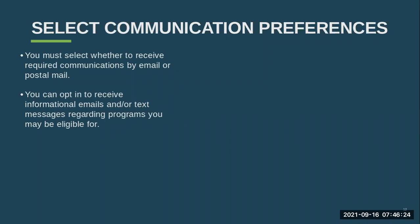The next step is going to be selecting communication preferences. FSA will send communications — sometimes based on programs that students are eligible for. They're not going to spam you, but they can send good information on programs. You need to decide whether to get information by email or by postal mail. They will send it either way, but we do recommend email.